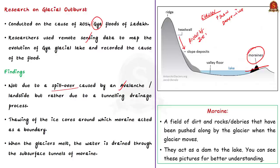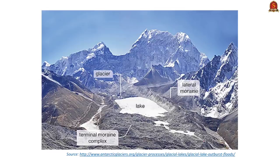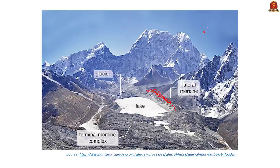Moraines are a field of dirt and rocks that have been pushed along by the glacier as it moves, forming a boundary across the glacier and acting as a dam to the glacial lake. When these glaciers melt, the water drains through subsurface tunnels of the moraine. This was the reason for the 2014 Ladakh floods — not spillover, but drainage tunneling through the subsurface of glaciers. The melted ice, that is water, flowed across the moraines through small tunnels, causing the floods in Ladakh.